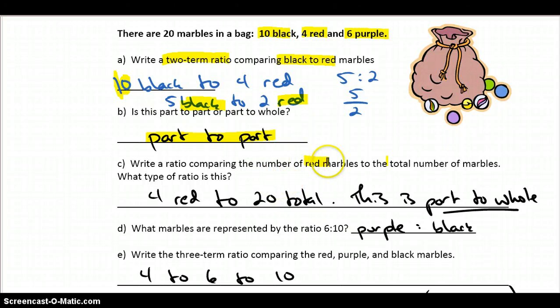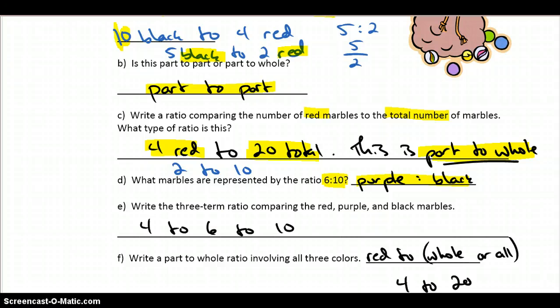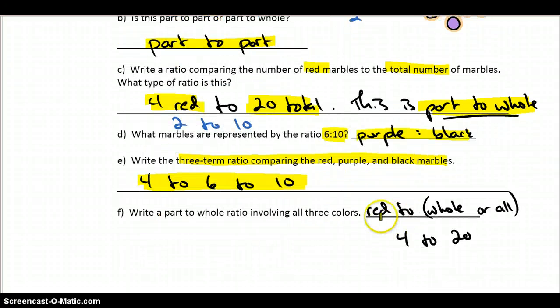Remember red marbles to total number of marbles? We had 4 red. We had 20 totals. We could say 4 to 20. Or if you like, we could put that in lowest terms. We could say that that's 2 to 10. And that again, or that in that case, we're talking about a part-to-whole ratio. The ratio of 6 to 10 would describe purple to black. And then a 3 term ratio comparing red to purple to black would look something like 4 to 6 to 10.